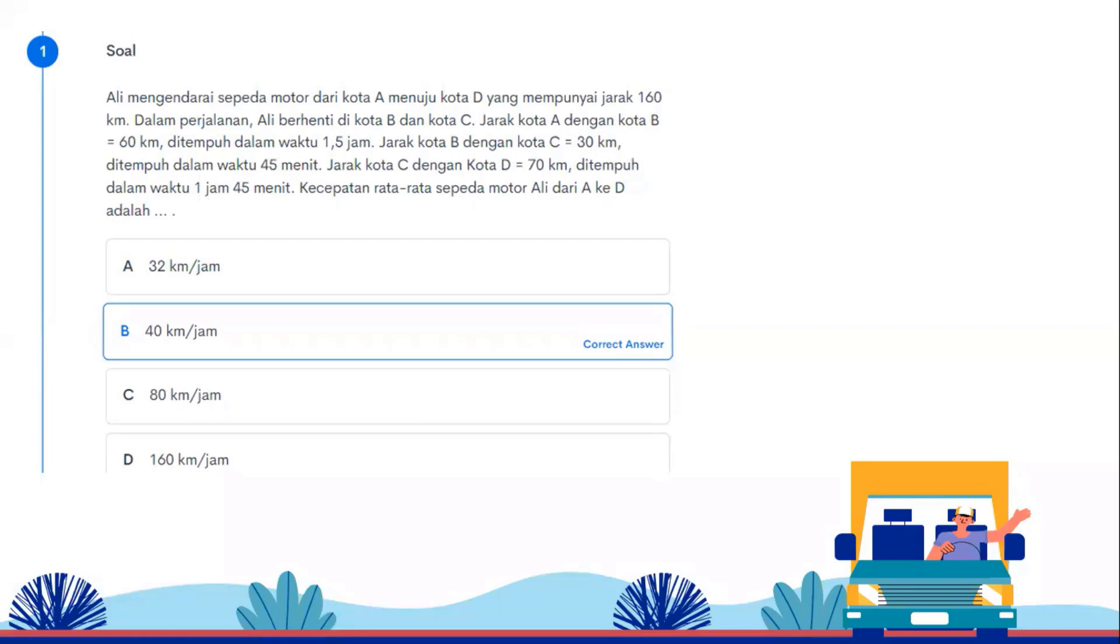Okay, let's start. We will discuss the material from the odd semester. First, Ali rides a motorcycle from city A to city D covering a distance of 160 km. During the journey, Ali stops at city B and city C.